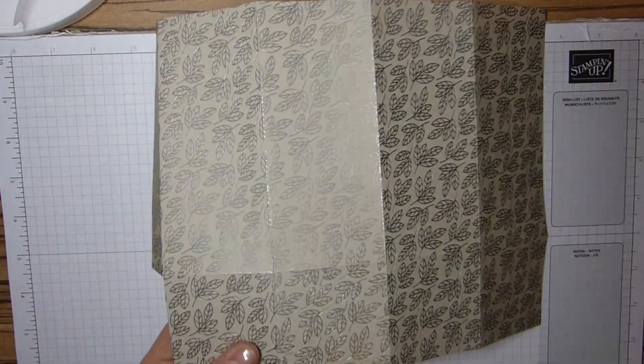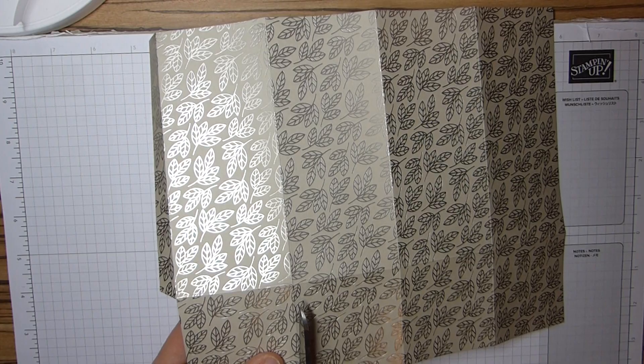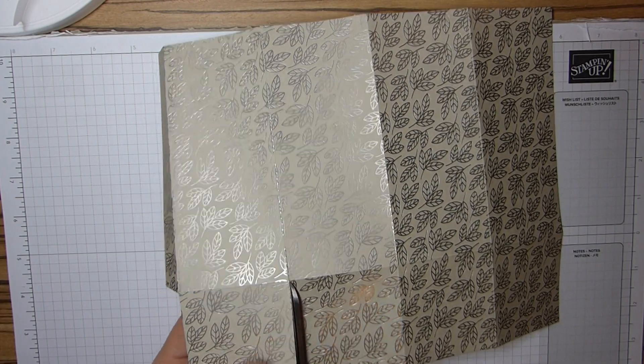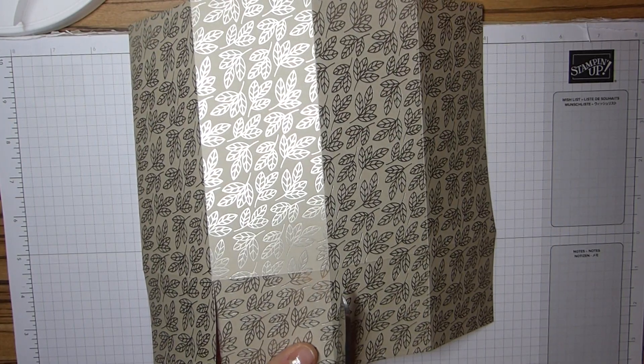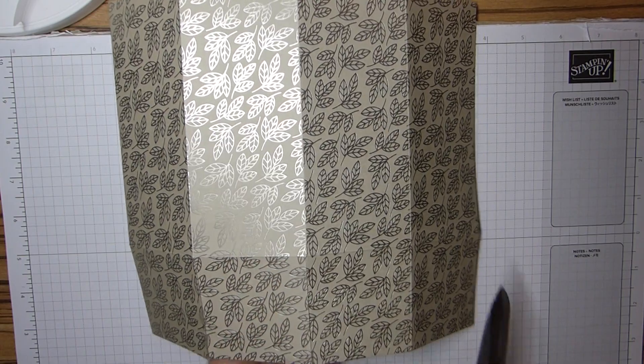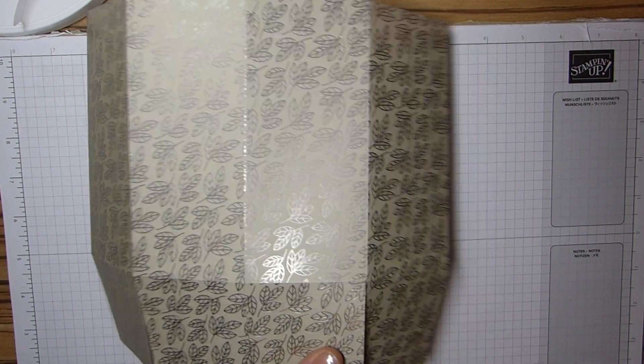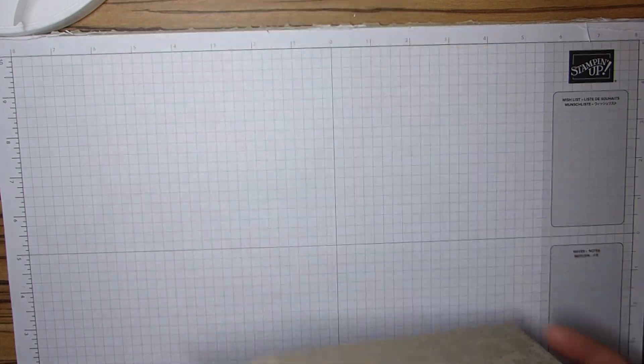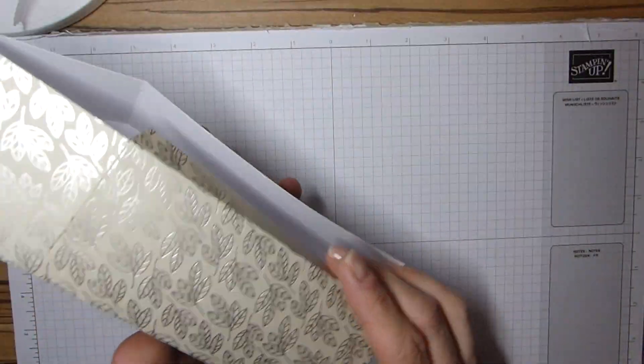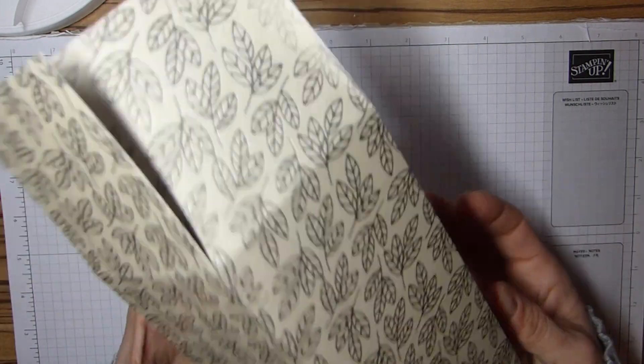And then I'm also going to cut these top sections. Now, again, if you want to use your trimmer, you can. I'm a bit more confident in cutting these with my scissors. We're just going to cut down those. And then, as you can see, this just becomes our lid.